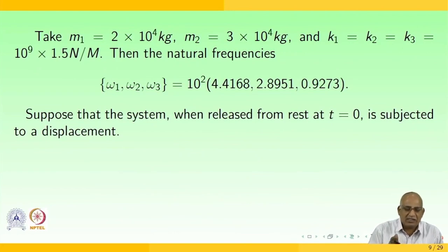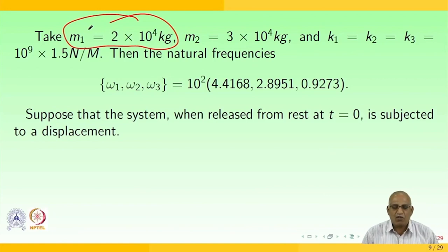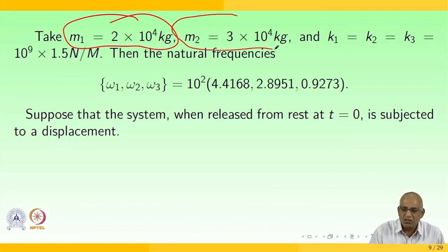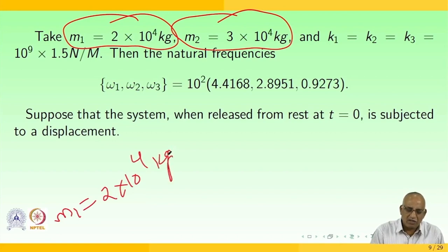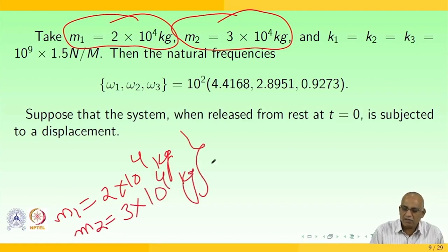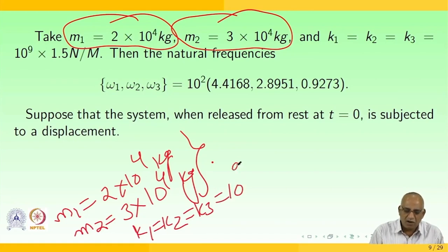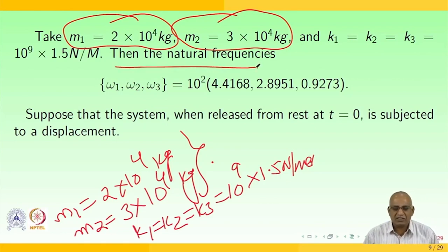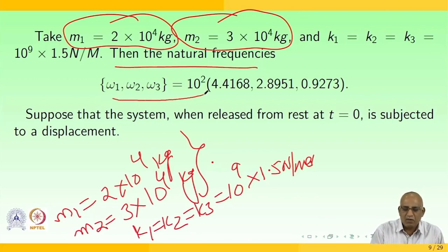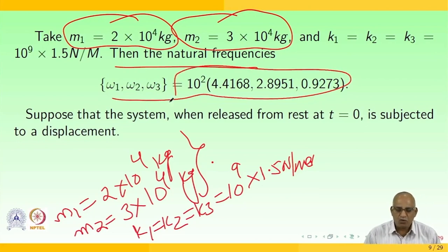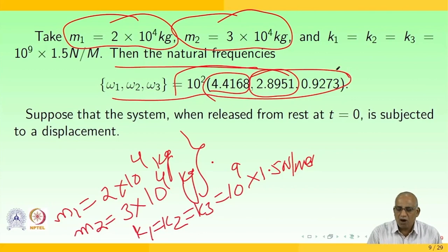For this example, take m1 = 2×10⁴ kg, m2 = 3×10⁴ kg, and k1 = k2 = k3 = 1.5×10⁹ N/m. Then the natural frequencies are ω1, ω2, ω3 = 10²×[4.4168, 2.8951, 0.9273].